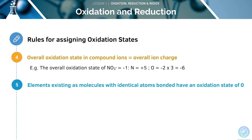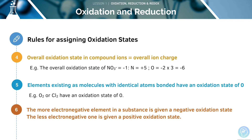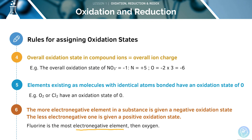Our fifth rule is that elements that exist as identical atoms bonded together have an oxidation state of zero — for example, oxygen and chlorine have an oxidation state of zero. Next, a more electronegative element in a substance is given a negative oxidation state, whilst the less electronegative one is given a positive oxidation state. It's useful to know that fluorine is the most electronegative element, followed by oxygen.